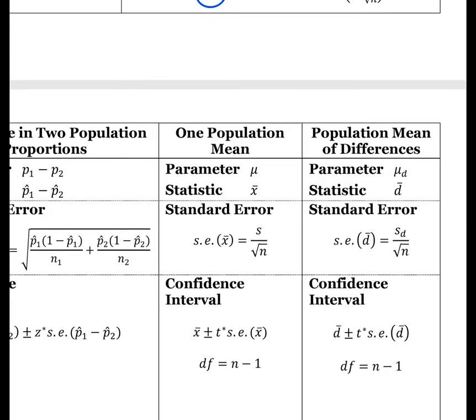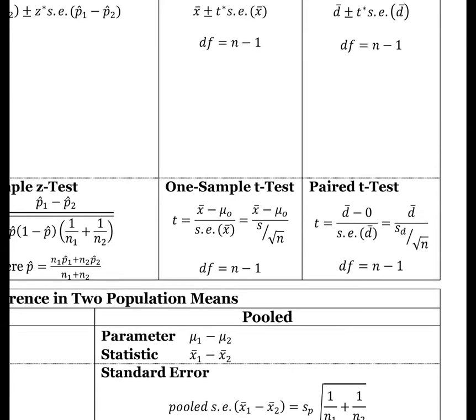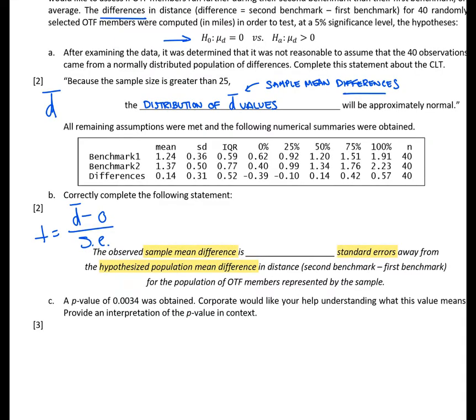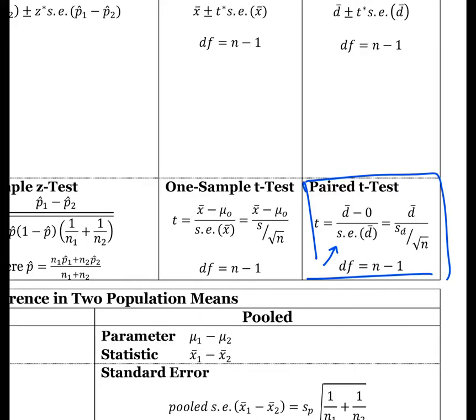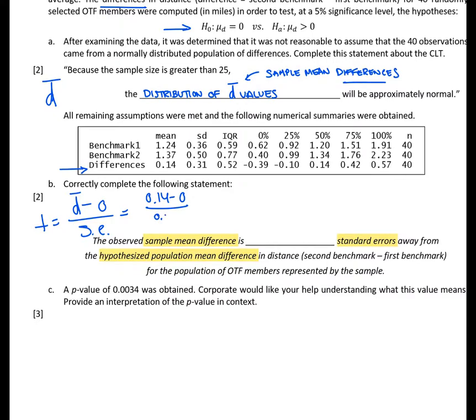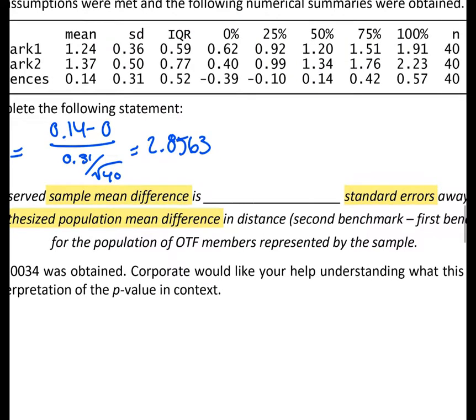If we head back to the formula card, we know we're working with our population mean of differences section. We can find our t-test statistic listed at the bottom. This is exactly what we're going for in part B. Now all we have to do is carry out the calculation. We know we're working with this last row of observations here, specifically the differences. So we plug in that 0.14. They don't give us the standard error here, but we look back to the formula. The standard error is simply the standard deviation of our sample divided by the square root of n. All we have to do is take our 0.31, divide by the square root of 40, and if we do those calculations, you should wind up with a value of 2.8563. So this is the value we're looking for, 2.86 standard errors away.